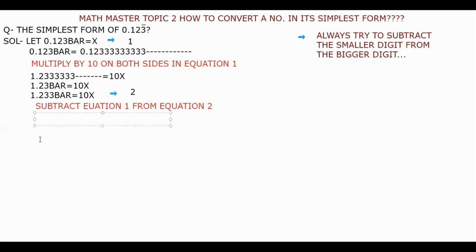When we will subtract equation 1 from 2, it implies 1.233 bar subtracted by 0.123 bar will be equals to 10x minus x. When you will subtract 1.233 bar minus 0.123 bar, it will provide you the number is 1.110. The bar will cancel each other, and the next term would be 9x. I can write 1.110 as 1.11 equals to 9x. Let's mark it here.